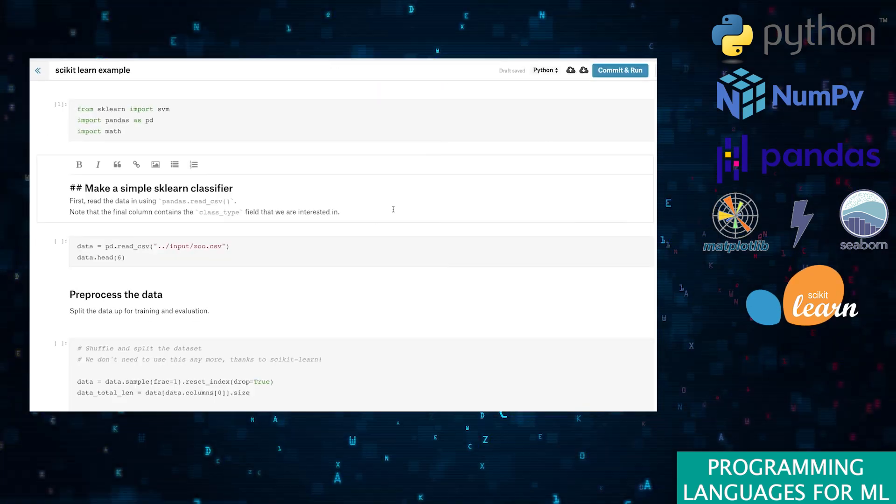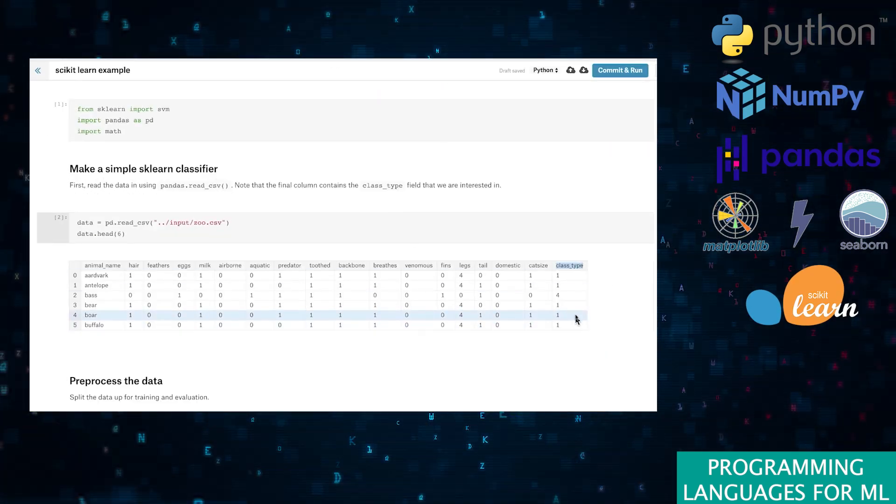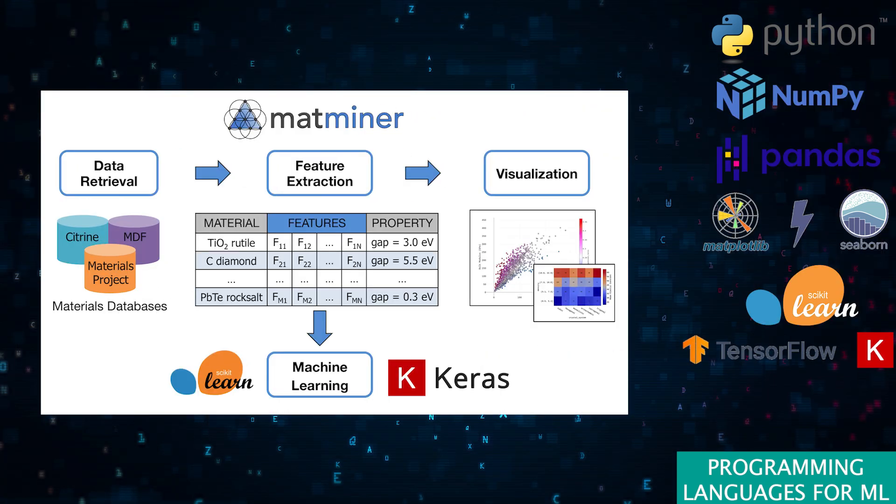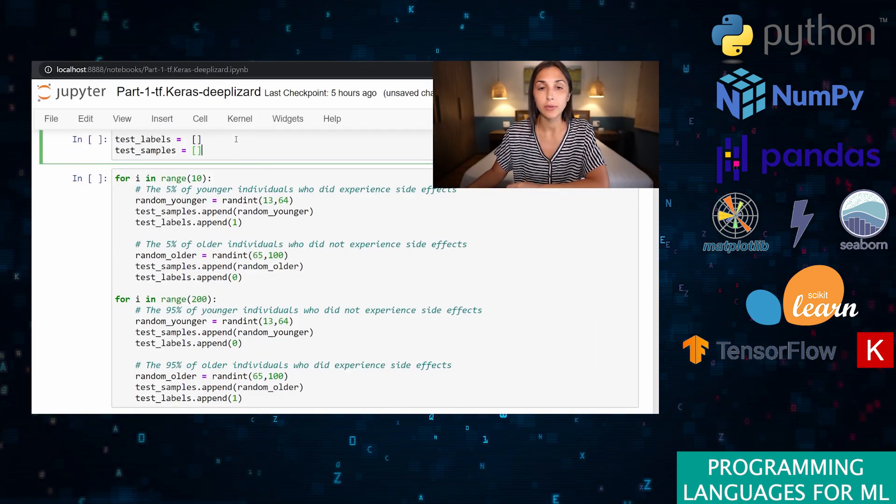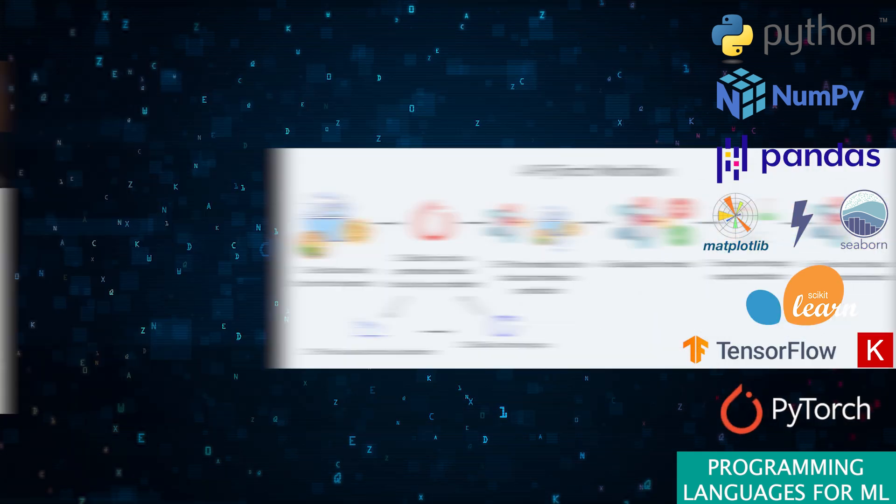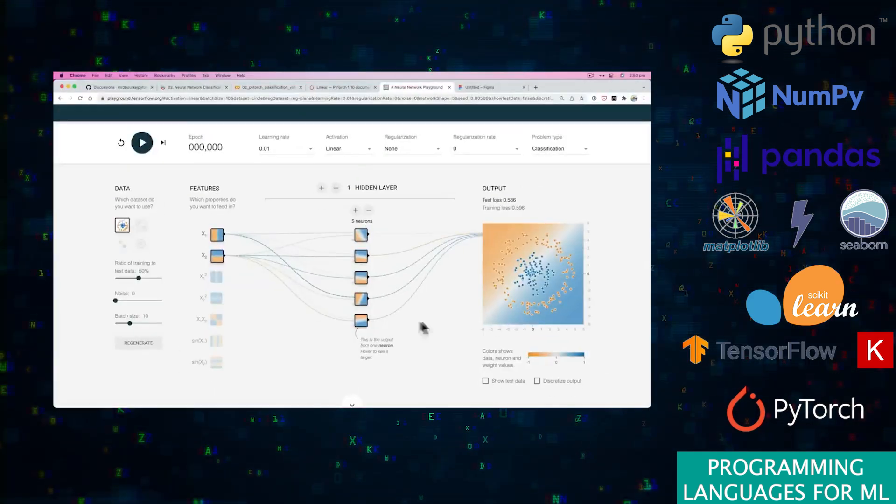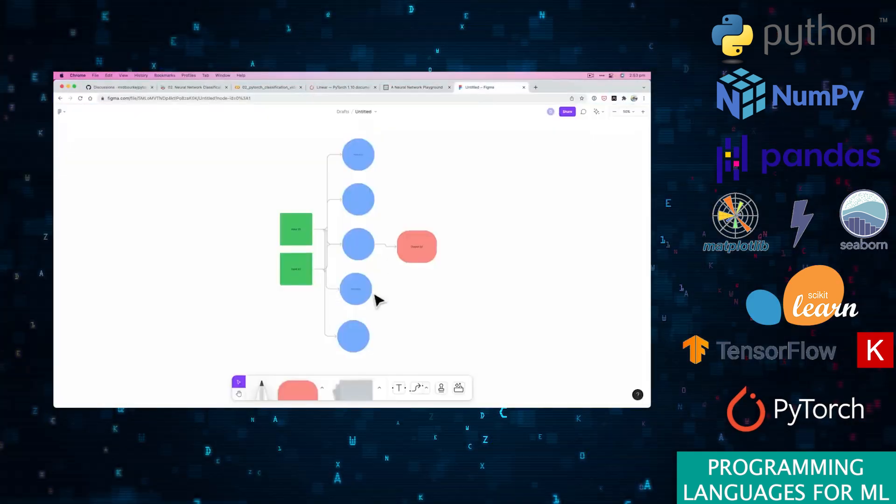Scikit-learn, a robust library for implementing a wide range of ML algorithms with ease. TensorFlow and Keras, the dynamic duo for deep learning offering both flexibility and power in building and training advanced models. PyTorch, favored for its intuitive design and ease of use in research and development.